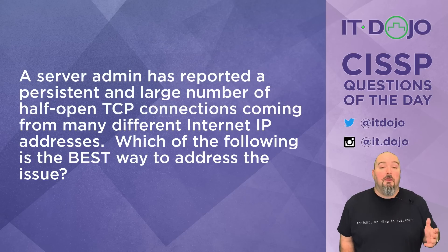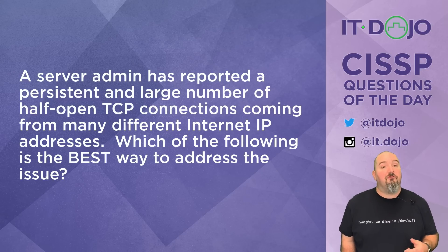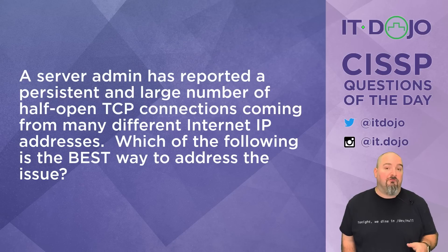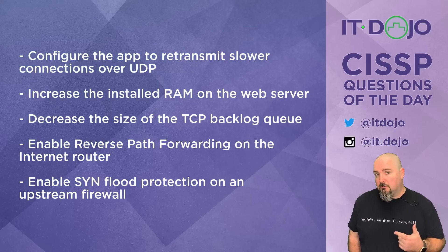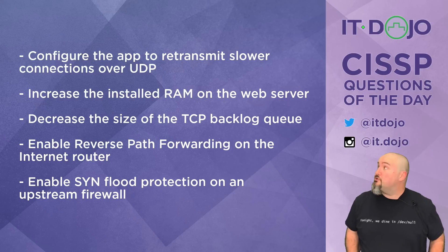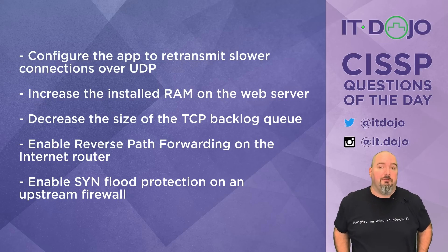Question number two. A server admin has reported a large number of persistent half-open TCP connections coming from a variety of different internet IP addresses. Which of these answer choices is the best way to address the issue? Your first answer choice says you should reconfigure the app to transmit slower connections via UDP. That statement really doesn't make a lot of sense — if you're communicating with TCP, you stick with TCP. You don't just switch back and forth between TCP and UDP.